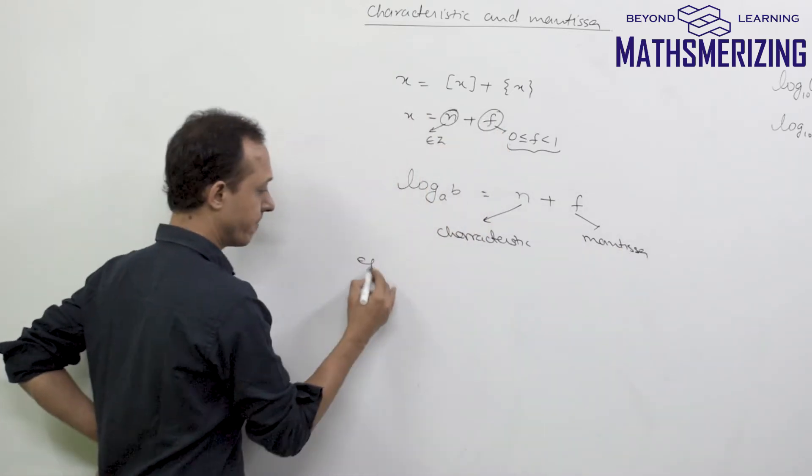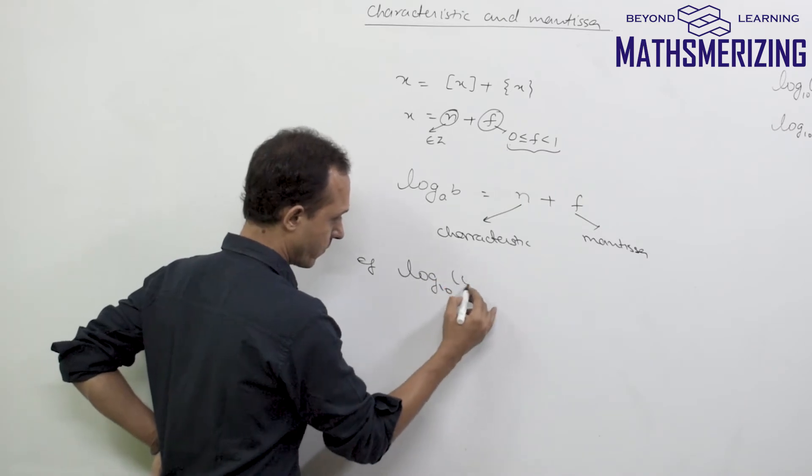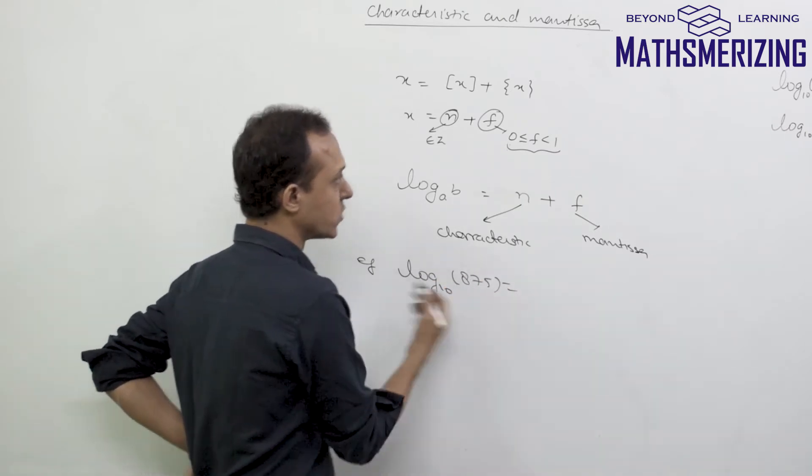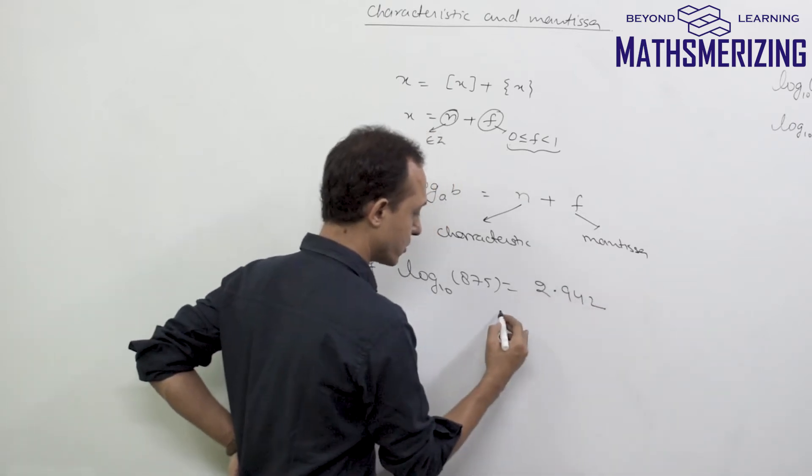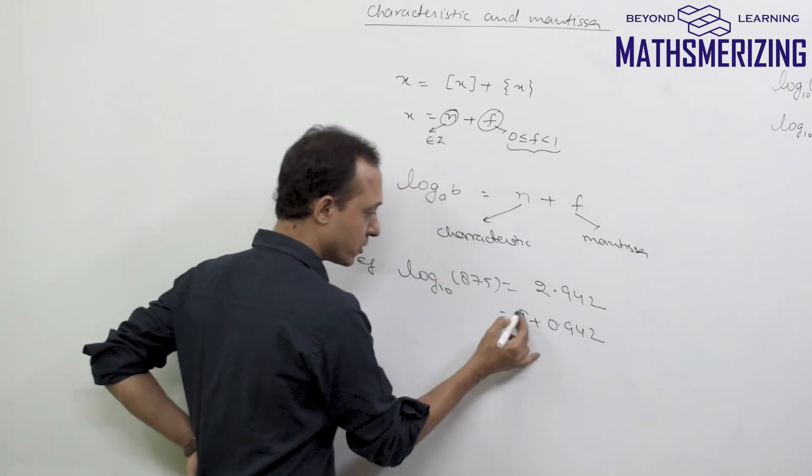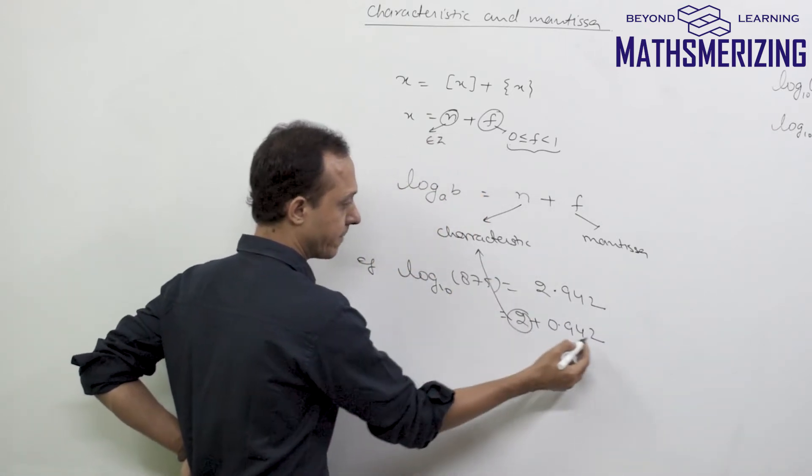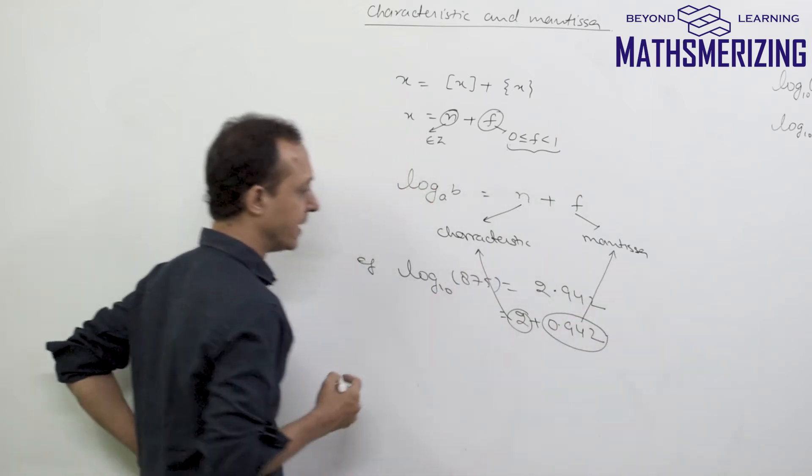For example, suppose I have log 875. If you find this value, you'll get 2.942, so I can write this as 2 plus 0.942. So this 2 is your characteristic and 0.942 is its mantissa.